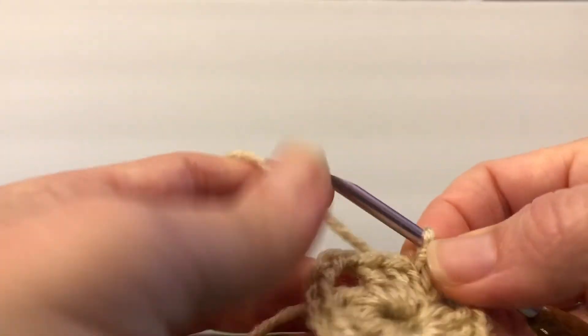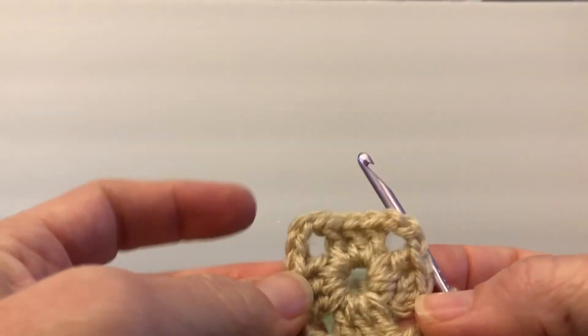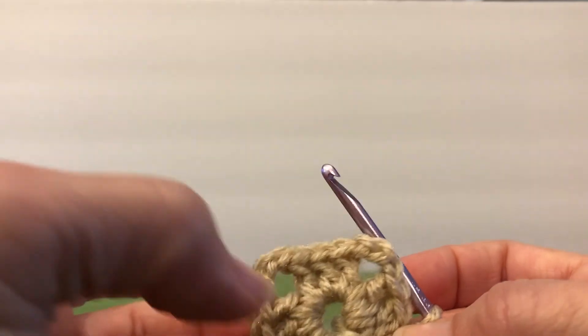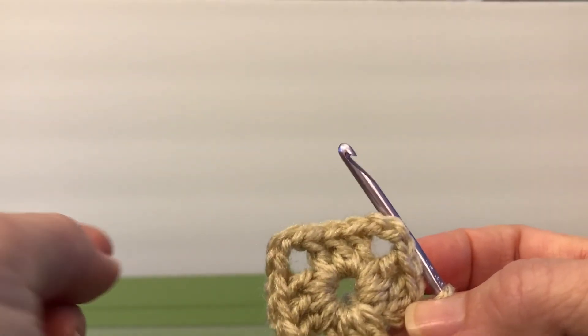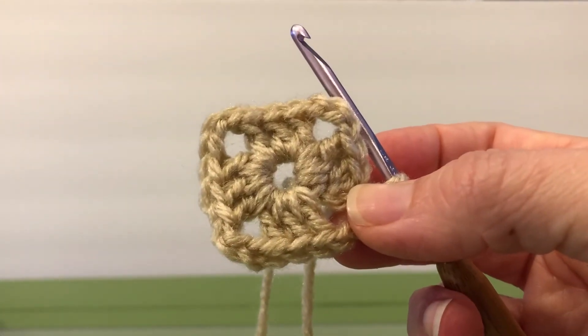And there we have it. So we have a nice square shape, don't we? Take a look at this. So you have the four granny clusters. This is your first round. So that's the end of round one. And we'll see you next time.